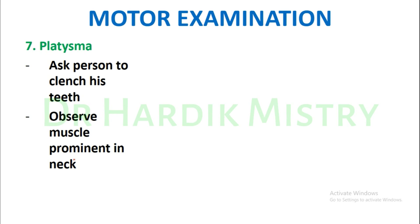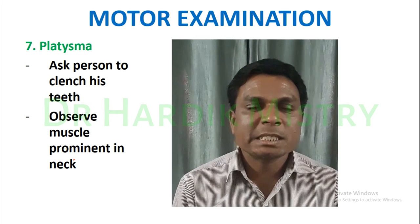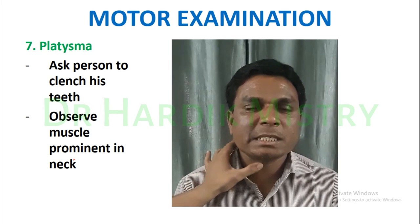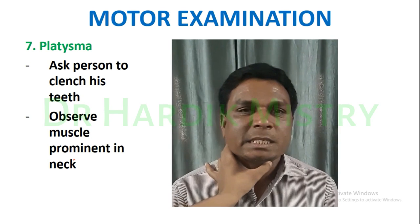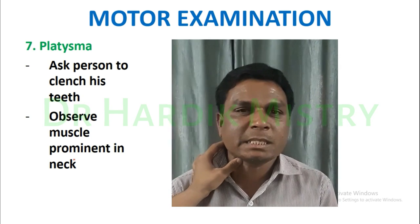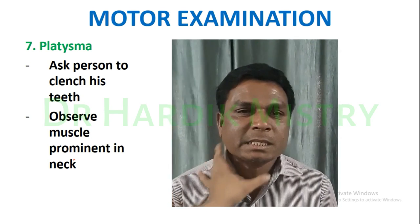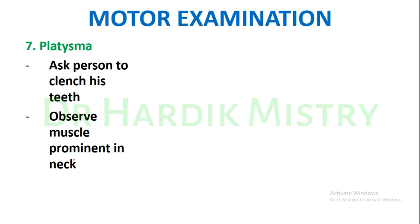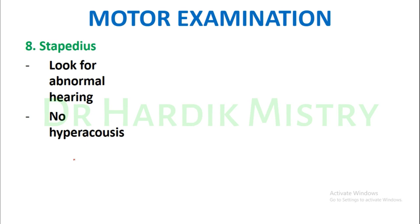To check the platysma muscle, ask the subject to clench their teeth and observe the muscle prominence in the neck. For the stapedius, we look for abnormal hearing; there must be no hyperacusis.